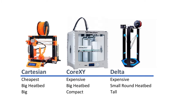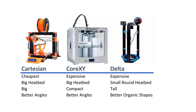As for print quality, it really depends on what you get. But generally speaking, assuming similar quality parts, Cartesian and Core XY style 3D printers are usually better for printing sharp angles and things like brackets and boxes, while Delta style 3D printers are usually better for printing rounded edges and more organic-looking 3D prints.